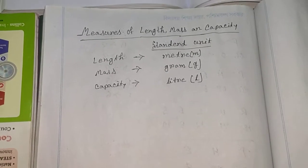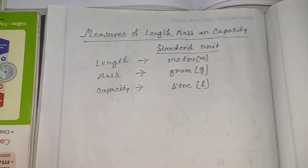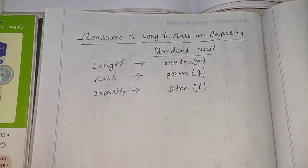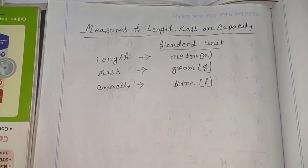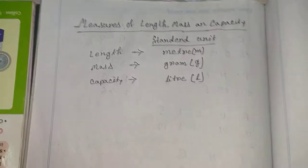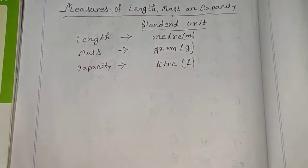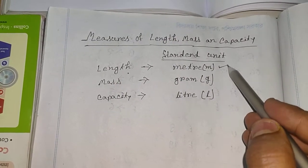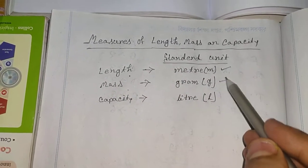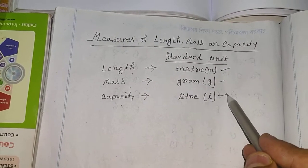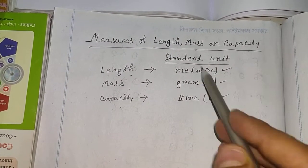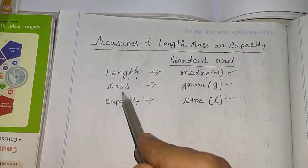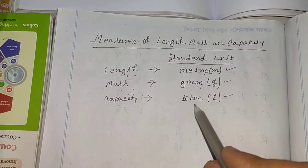Hello children, in this class we are going to start a new chapter: measures of length, mass, and capacity. This is a very easy chapter and you can easily understand it. We measure length with meter, we measure mass with gram, and we measure capacity with liter. These are called the standard units.